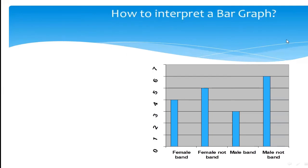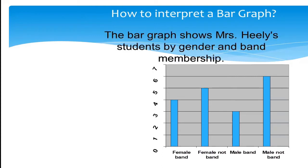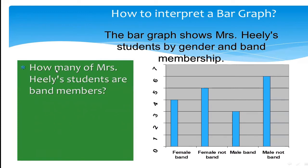Let's look at how to interpret a bar graph. This bar graph shows Mrs. Haley's students by gender and band membership — Mrs. Haley is a teacher and these are her students. The first question: how many of Mrs. Haley's students are band members? They didn't ask male or female — just the total band members, which can be male, female, or both.